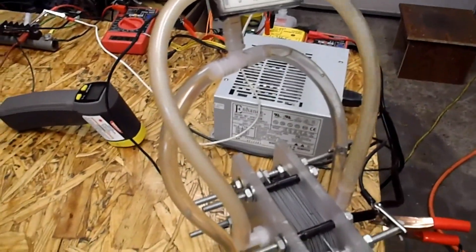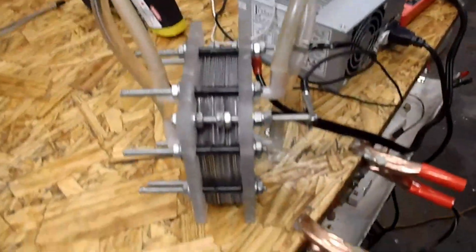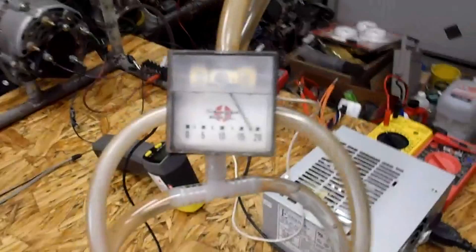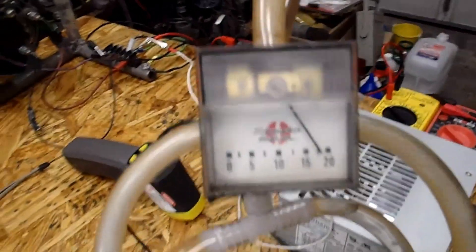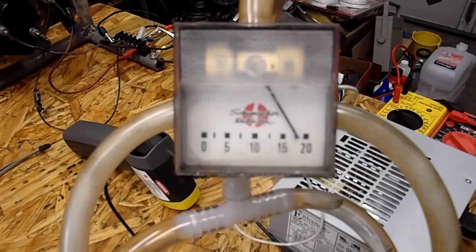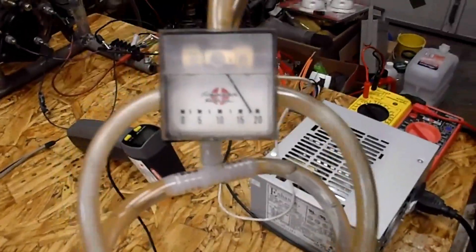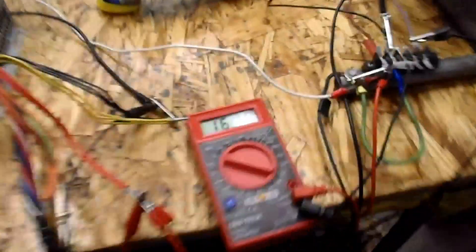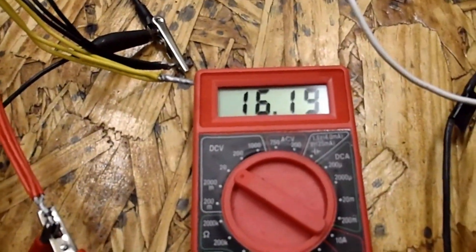Right now it's running at between 18 and 20 amps somewhere in there. I need to put a shunt on there so I can find out exactly where it is. The voltage is right around 16.2 total volts.